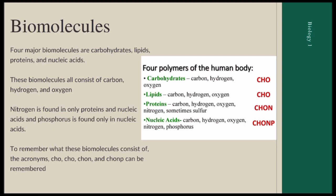There are a few acronyms used to memorize the composition of each biomolecule: CHO, CHO, CHON, CHON. Carbohydrates have carbon, hydrogen, and oxygen. Lipids also have carbon, hydrogen, and oxygen. Proteins have carbon, hydrogen, and oxygen, plus nitrogen. Nucleic acids have carbon, hydrogen, oxygen, nitrogen, and also an additional phosphorus atom. So CHO, CHO, CHON, CHONP is an easy acronym to remember the elemental composition of each biomolecule.